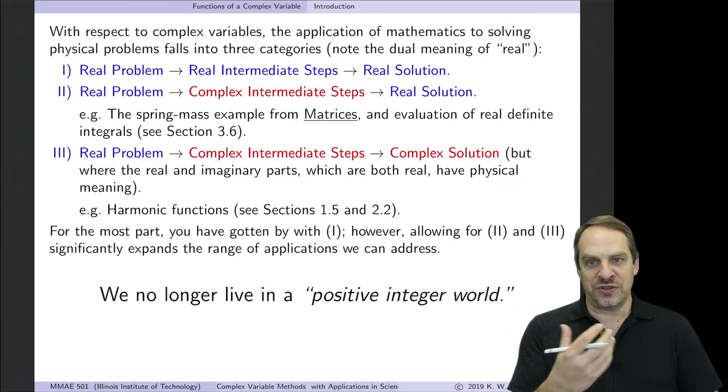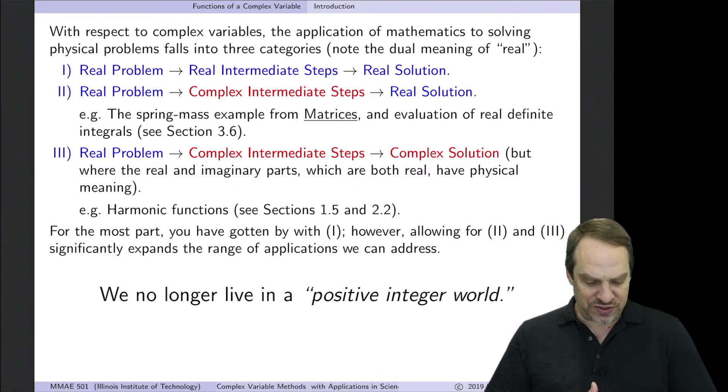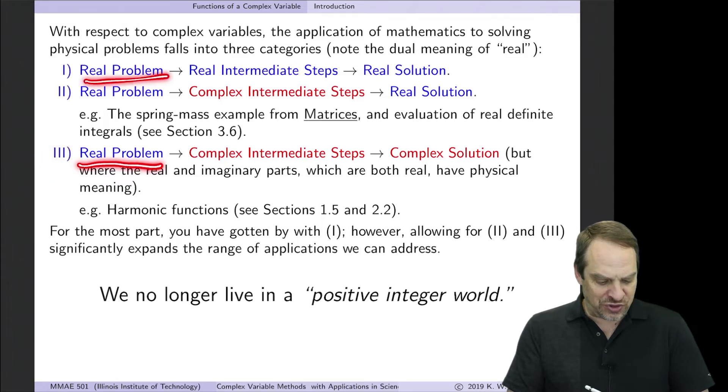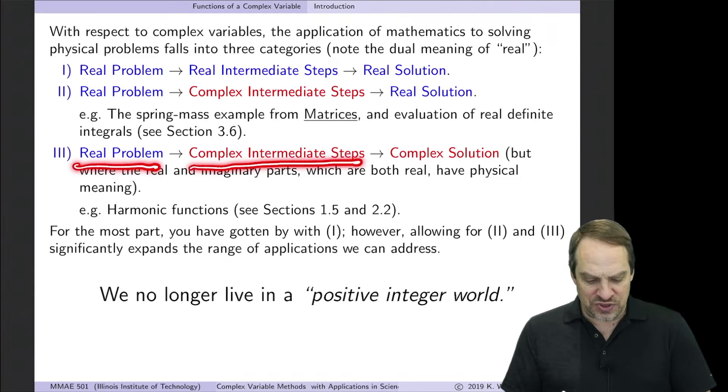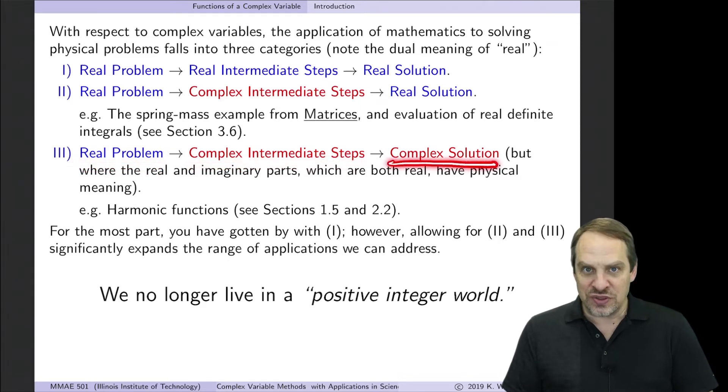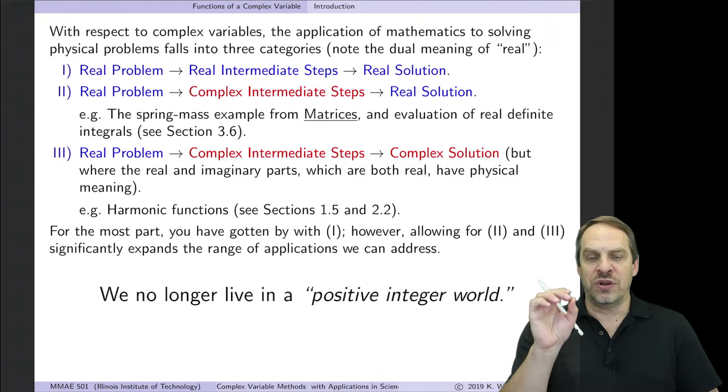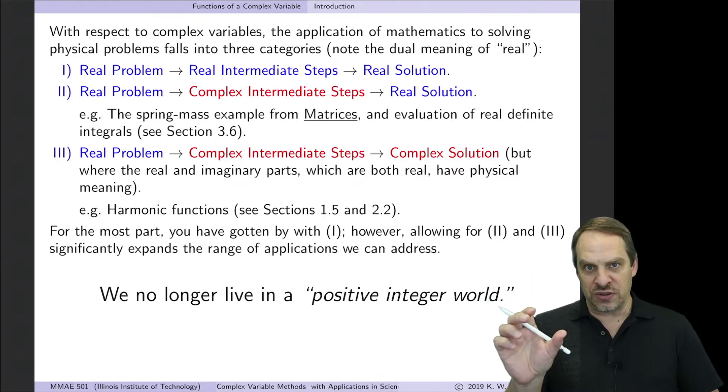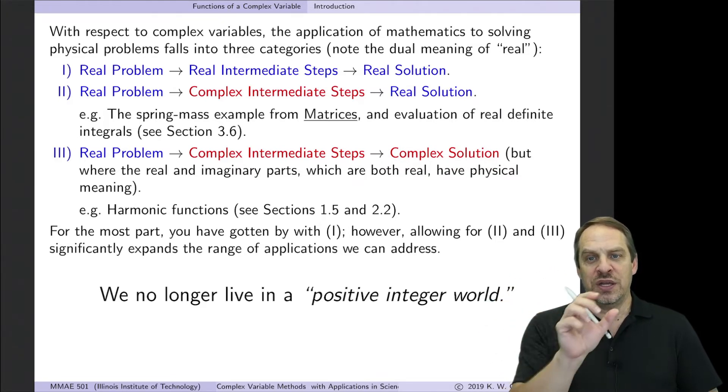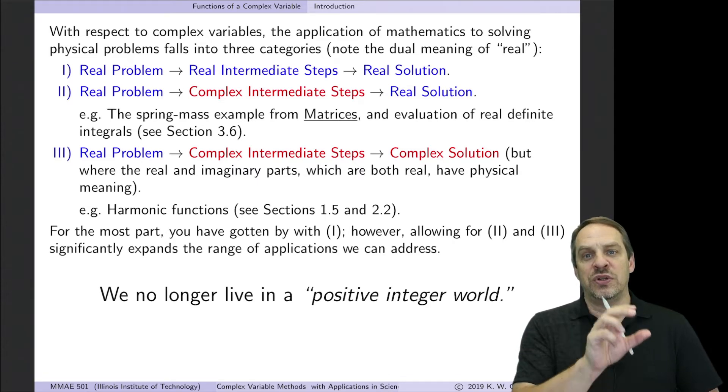But in order to solve it, we ended up getting some complex numbers along the way. But in the end, we ended up with the real solution that showed the oscillatory behavior of the spring mass system. And you may have seen other examples similar to that. But there's a third class of problems where you start off with the real problem. You'll notice you always start off with the real problem. We start off with the real problem. You have complex intermediate steps, but you end up with a complex solution. However, the real part of that complex solution, which is real, has physical meaning. And the imaginary part of that complex result, which itself is real, also may have some physical meaning.